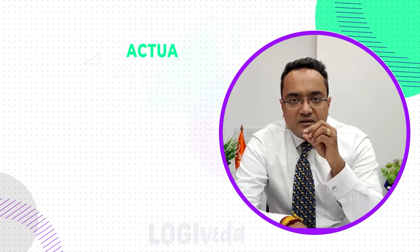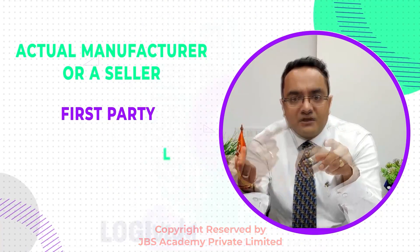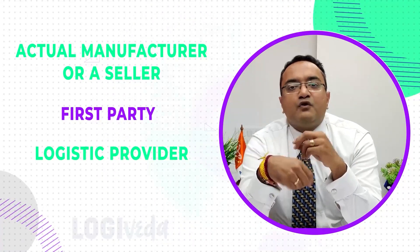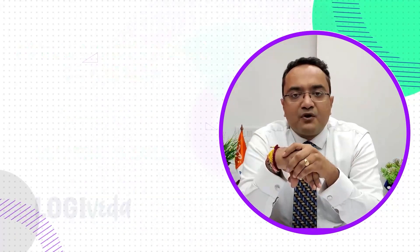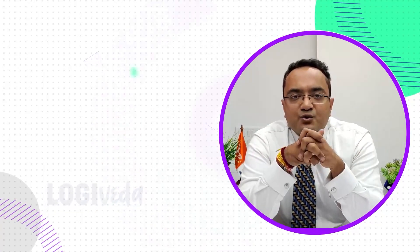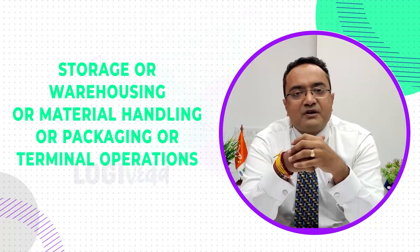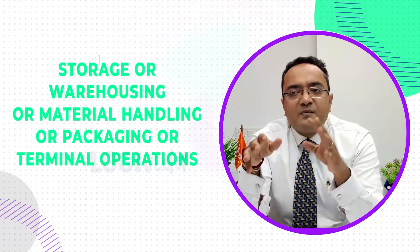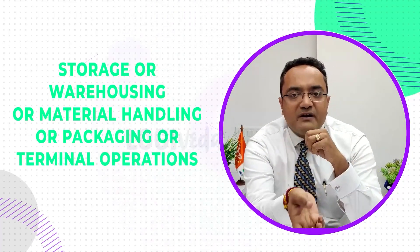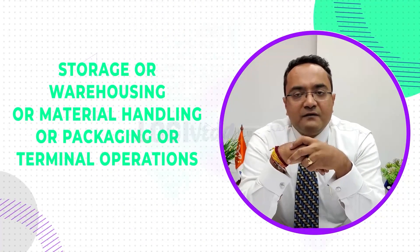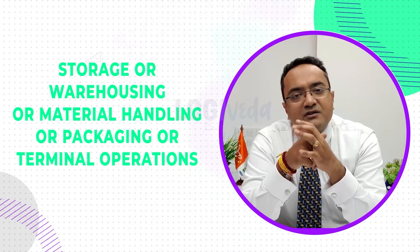The actual manufacturer or seller becomes the first party. The logistics provider, given a contract by the first party, becomes the second party, and they further subcontract for activities like storage, warehousing, material handling, packaging, or terminal operations. That is how three different parties get involved to execute the movement from raw material through manufacturing to delivery of goods to the end user. This is the definition of 3PL.